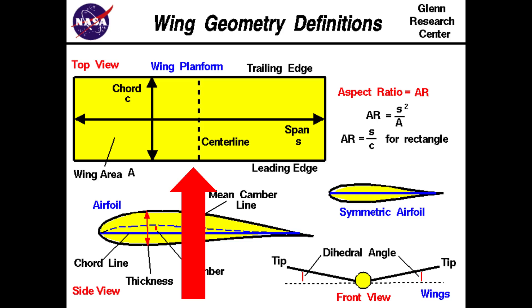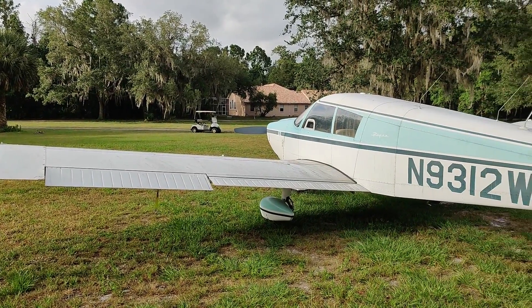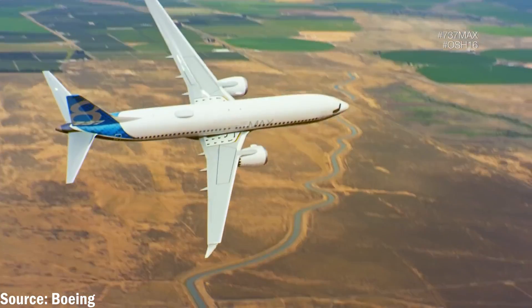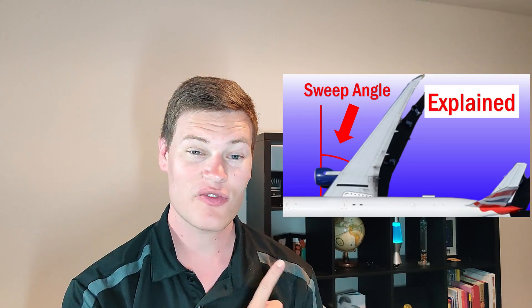That brings us to our third wing design category: the wing planform. The wing planform is the silhouette of the wing when viewed from above or below. The simplest wing planform is a box wing, or a rectangular wing. This is by far the cheapest and easiest wing to manufacture, which is why you'll often find it on light aircraft.